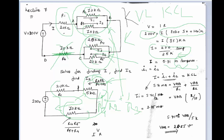Since the resistance is in kilo ohm — that is 10 to the power 3 — when it goes to the denominator it becomes 10 to the power minus 3, which is why the current comes out in milli ampere.